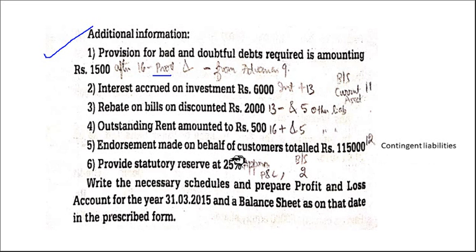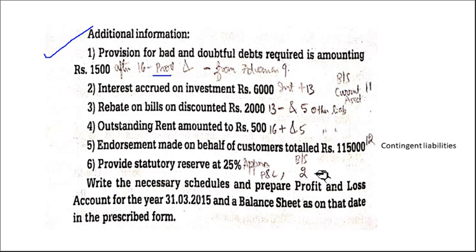Then provide statutory reserve at 25% — so it comes under appropriation. Once we get the profit we just distribute it. So in the profit and loss account we have to write under appropriation. And in the balance sheet, reserves — where does the reserve appear? Schedule 2. Write the necessary schedules and prepare the profit and loss account and balance sheet. This type of problem will appear for 24 marks.